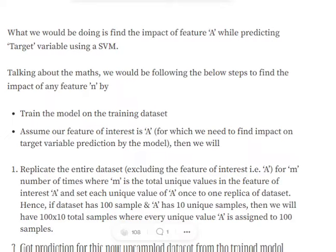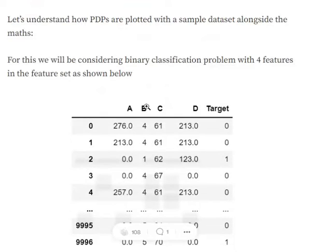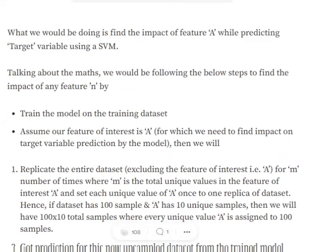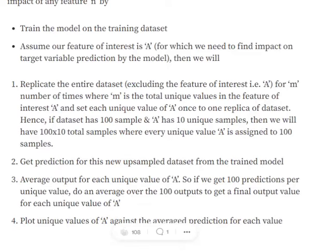Now assume that out of all these features, I wish to know the impact of feature A on the prediction made by the model. What we would be doing is replicating the entire training dataset for m number of times, where m is the total unique values present in the feature of interest A. For example, assume that in the training set we have 100 samples and A has 10 unique values. We would then have 10 times 100 samples in the new dataset—the replica we created—that is 1,000 samples.